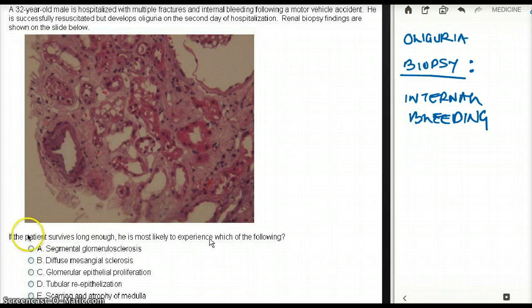Okay, so now they're saying if the patient survives long enough, he's most likely to experience which of the following? So what can we see if he survives long enough? Anytime I see oliguria, the first thing that comes to my mind is ATN, acute tubular necrosis. And the more reason I think this is ATN is because there is also internal bleeding. The internal bleeding is responsible for damage of the epithelium of the kidney.